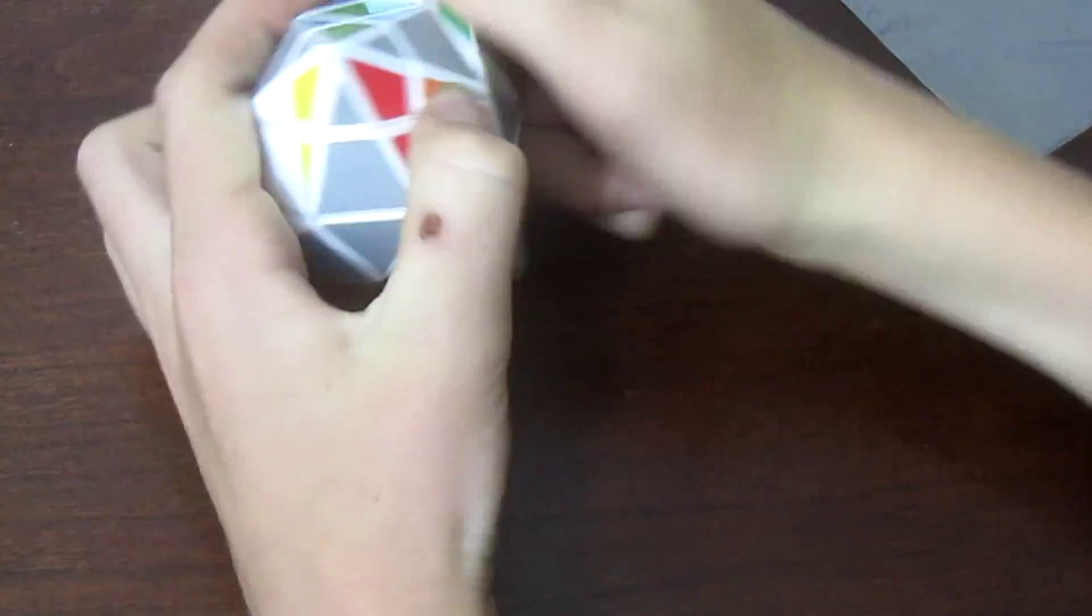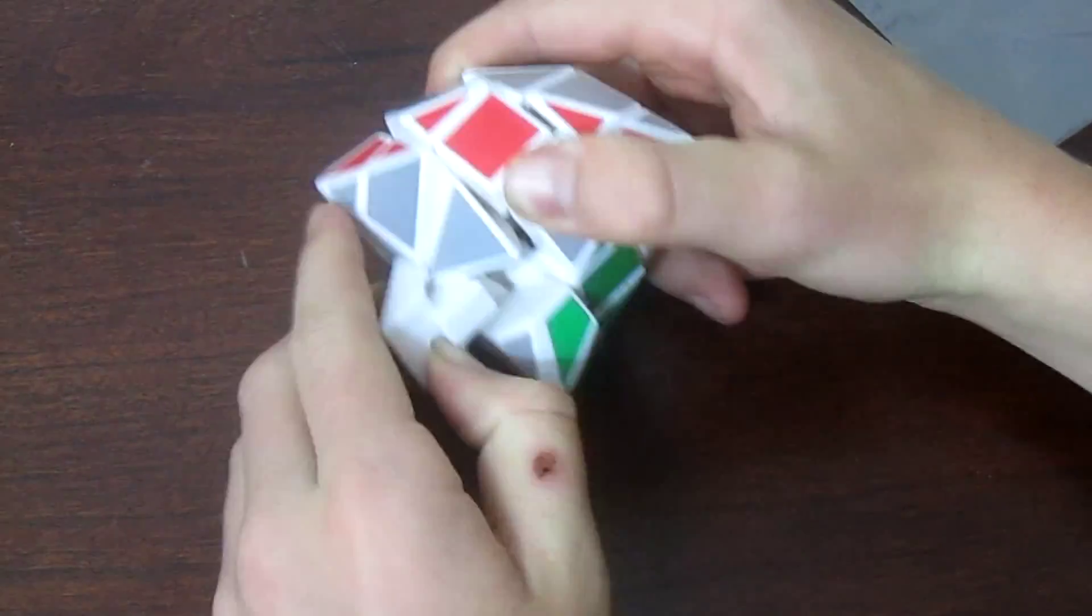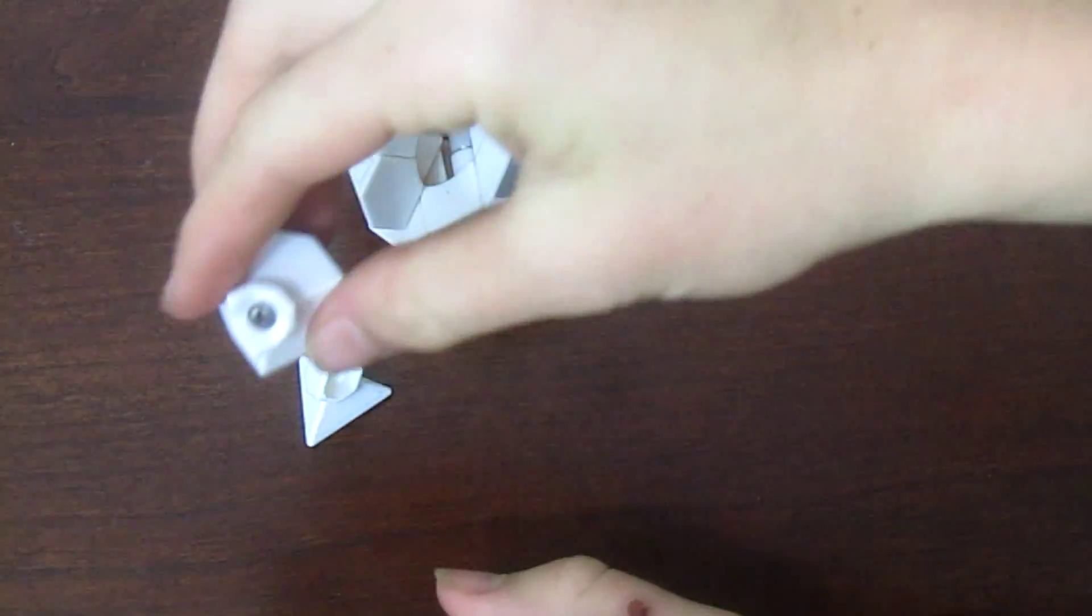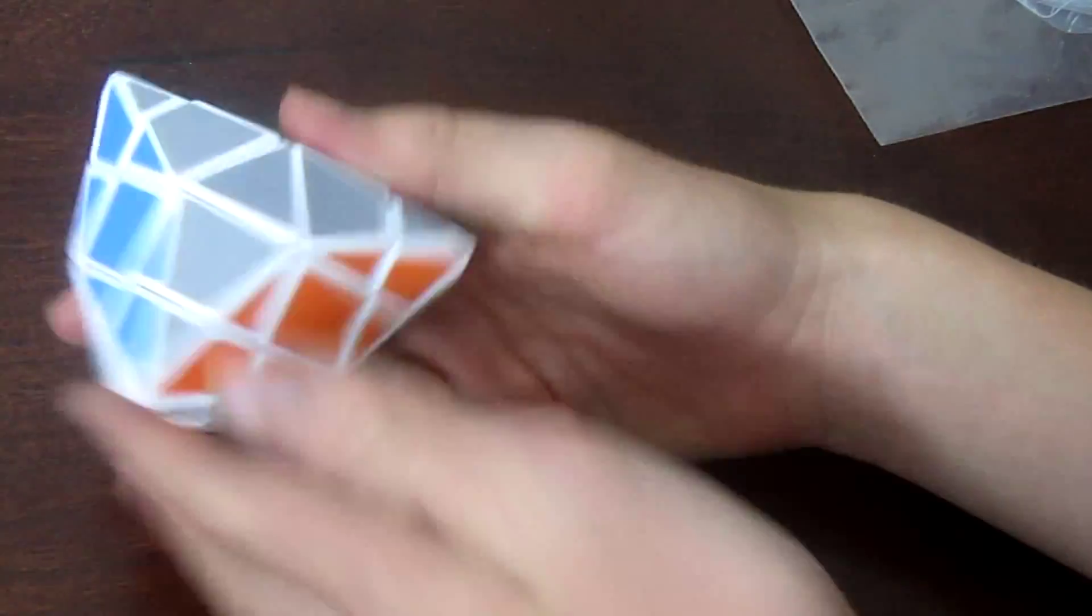So yeah, it has the standard color scheme as a normal one. Yeah, this thing doesn't jumble though, it just shape shifts a little bit. I'm pretty sure this thing would look really cool scrambled. Let's do a checkerboard pattern here. It's really difficult to turn though, so yeah, obviously turning is not the best on this thing. There we go.